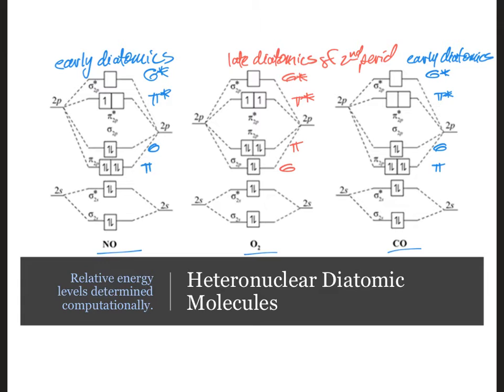You won't be expected to predict this for the heteronuclear diatomics. Rather, we want you to be able to fill in the electrons given the molecular orbital diagram.